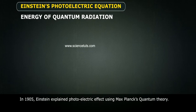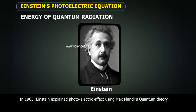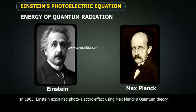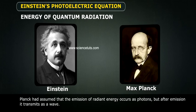In 1905, Einstein explained photoelectric effect using Max Planck's quantum theory. Planck had assumed that the emission of radiant energy occurs as photons. But after emission, it transmits as a wave.